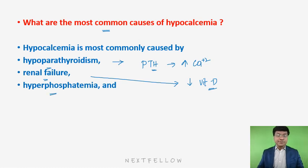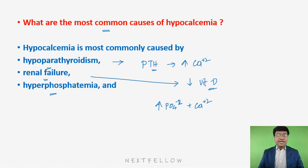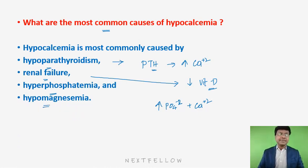Hyperphosphatemia is another cause. Whenever there is an increase in phosphate, it will form a precipitate with calcium — that is, calcium phosphate is formed. Once calcium phosphate forms, calcium is being utilized, so there will be hypocalcemia.